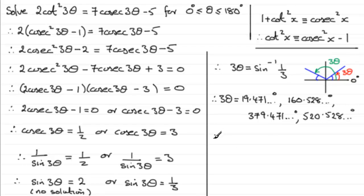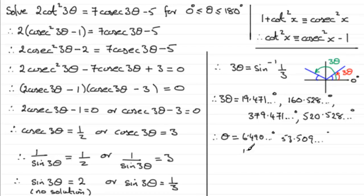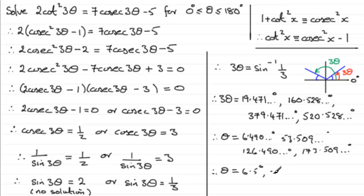Dividing each value of 3θ by three to find θ: 19.471 ÷ 3 ≈ 6.490°; 160.528 ÷ 3 ≈ 53.509°; 379.471 ÷ 3 ≈ 126.490°; 520.528 ÷ 3 ≈ 173.5°. Rounding to one decimal place: θ = 6.5°, 53.5°, 126.5°, and 173.5°.